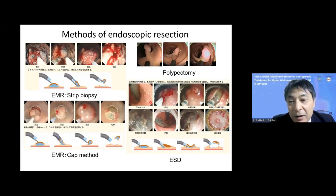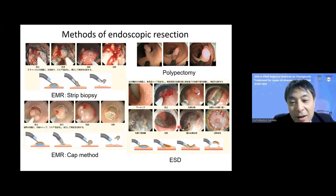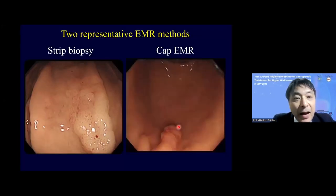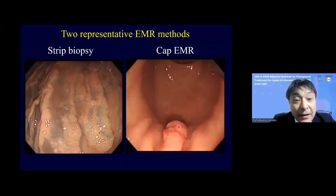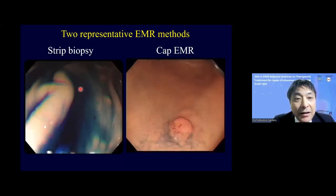ESD is a wonderful technique: after marking, submucosal injection, mucosal incision, and submucosal dissection, the region is completely resected. We can remove large regions such as more than five centimeters, and when the region has ulcerative findings, it is fine to remove it in en bloc fashion.